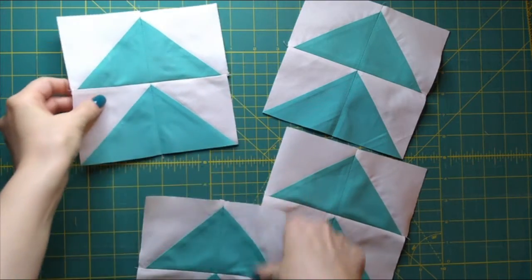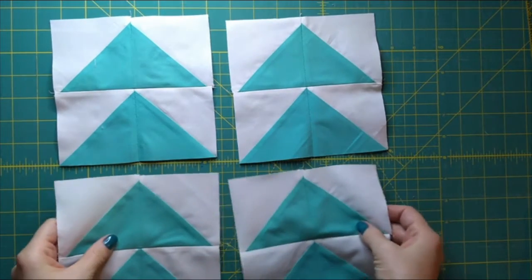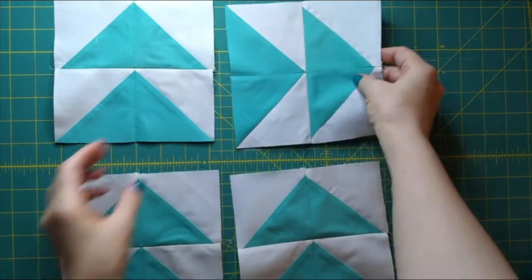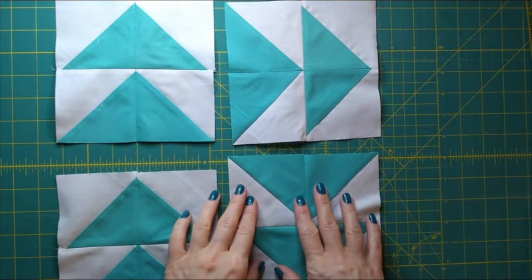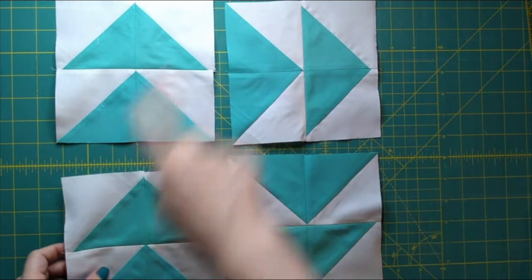Okay, so now we have four little blocks of two flying geese units and we will arrange them according to the pattern design. Each one, this is like the rail fence where each one is a 90 degree turn from the last one if you're going clockwise.